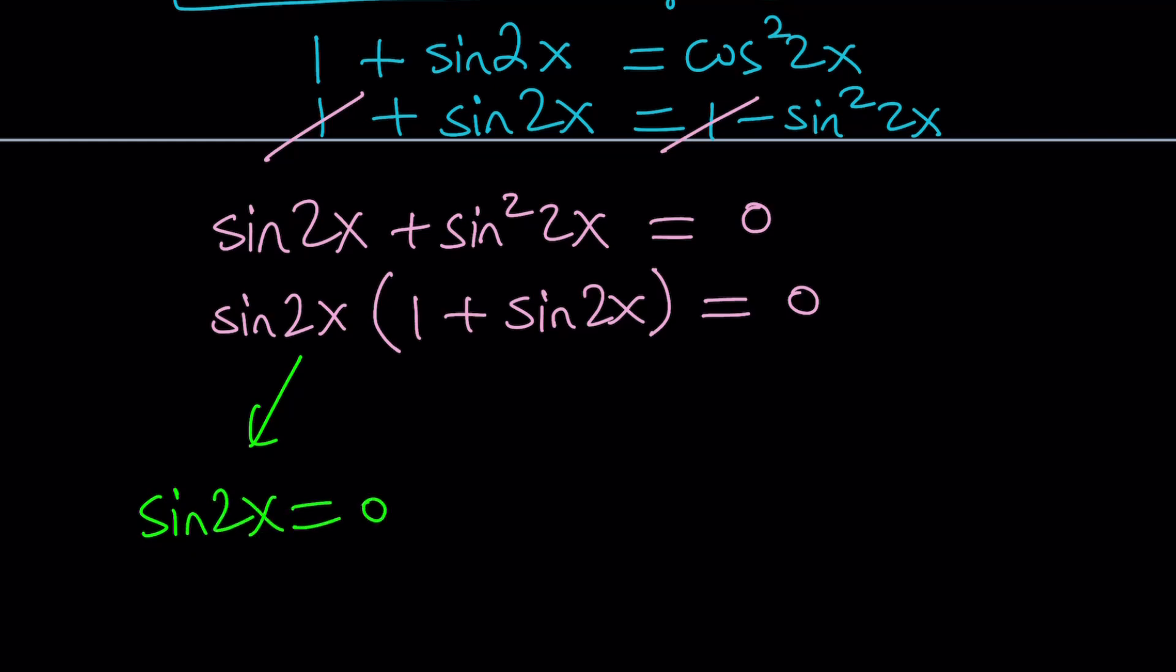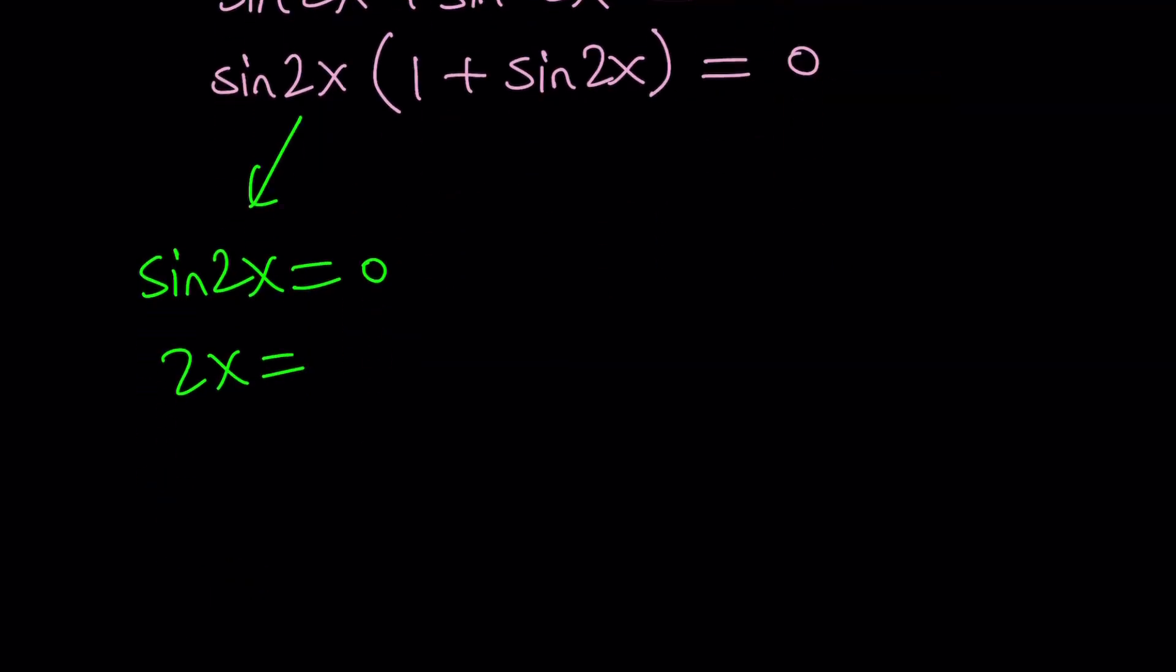And what is that supposed to mean? Think about it. It just means that 2x is a multiple of pi. Even or odd doesn't matter because if you think about the unit circle, on the unit circle, integer multiples of pi always gives you 0 at sine. So from here, we can divide both sides by 2 and write x values as n pi over 2. Don't forget, n is an integer.